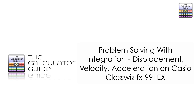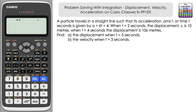Hello and welcome to the calculator guide video on problem solving with integration: displacement, velocity, and acceleration on a Casio ClassWiz FX-991EX. A particle travels in a straight line such that its acceleration a in meters per second squared at time t seconds is given by a = 6t + 4. We also know that when t = 2 seconds the displacement s is 10 meters, and when t = 4 seconds the displacement is 106 meters. We have to find: (a) the displacement when t = 5 seconds, and (b) the velocity when t = 3 seconds.